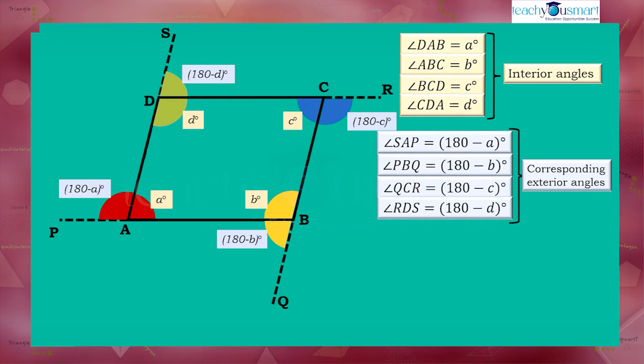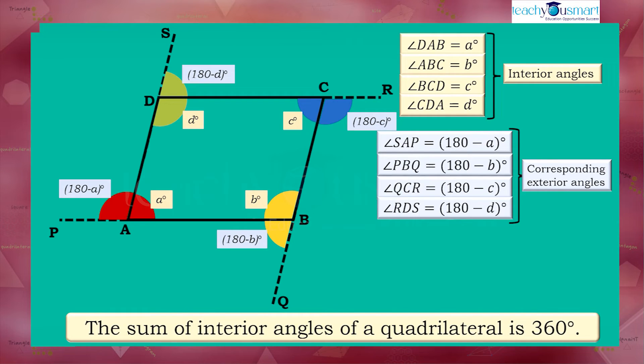We learned in the previous session that the sum of interior angles of a quadrilateral is 360 degrees.